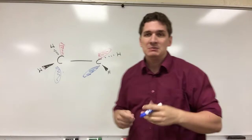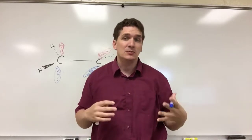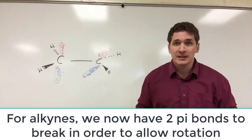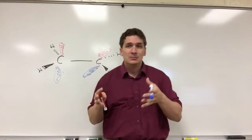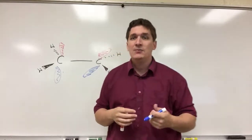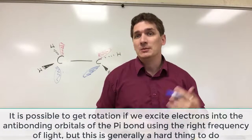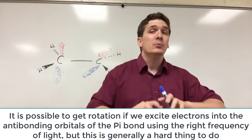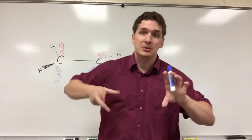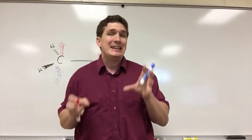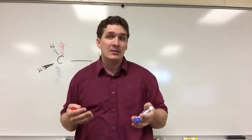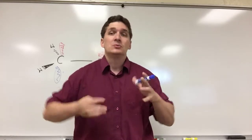Typically, when we look at alkenes, particularly along the double bonds — and this is especially true for alkynes where we have the triple bond — we don't get rotation along the carbon-carbon double bond, because in order to do that, we'd have to break the double bond. Is this possible? Yes. If we excite with the right energy of light, we can promote electrons into the anti-bonding orbitals of the p orbital, which will temporarily break them, and then thermal energy will allow them to rotate. But in terms of just heating, you cannot generally supply enough energy to an alkene to make it break the double bonds so it'll rotate.